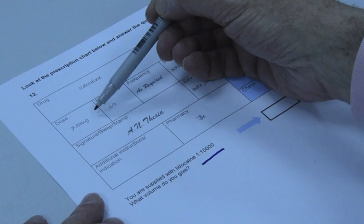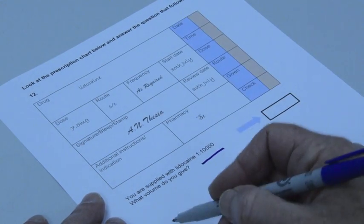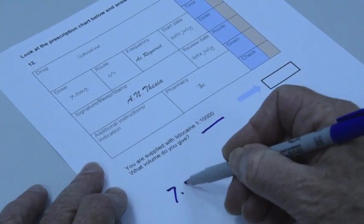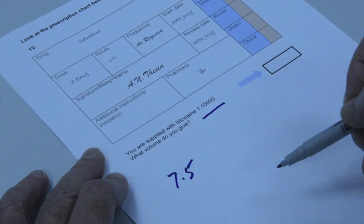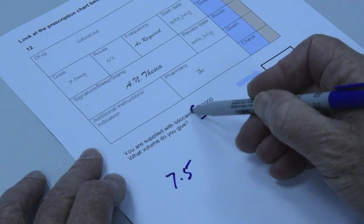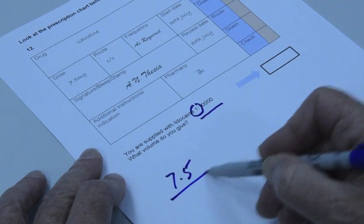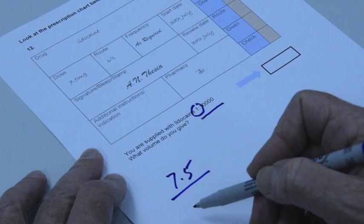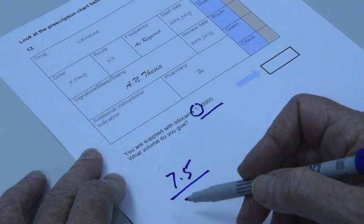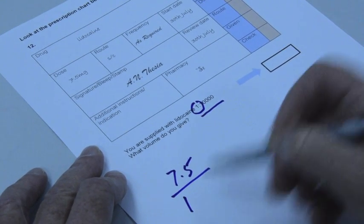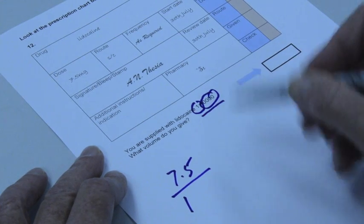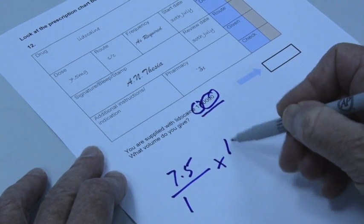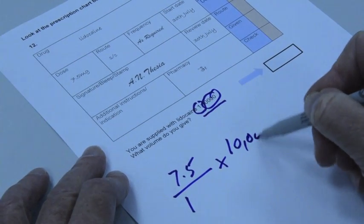So here we have the dose of 7.5 milligrams. What do they need? This is fairly easy. 7.5 milligrams. What have I got? I've got one, and what's it in? It's in quite a lot. It's in ten thousand, ten thousand mils.